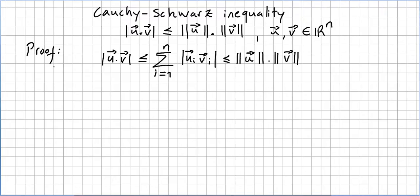For the proof we are going to prove a stronger statement. If you prove a stronger statement than the one you want to prove, the original will be proved as well. The vectors here will have n components. We are going to prove that the inner product of u and v — the absolute value of the inner product — is less than or equal to the sum from i=1 to n of uᵢ times vᵢ.